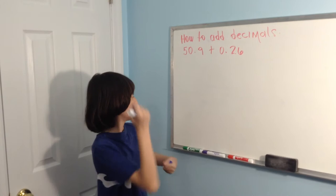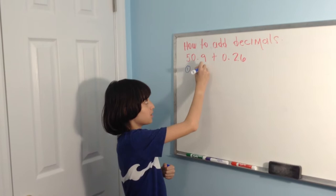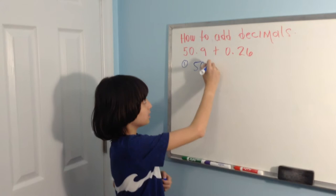50.9 plus 0.26. Step number one: write 50, and make the decimal a little bit bigger so that everyone can understand.